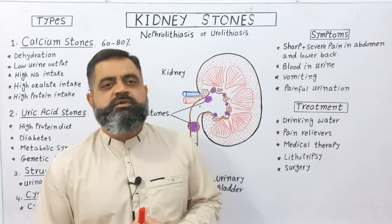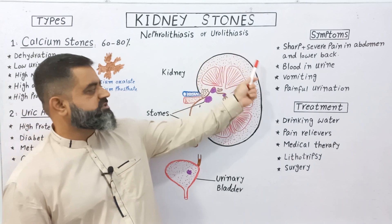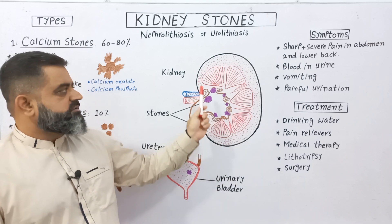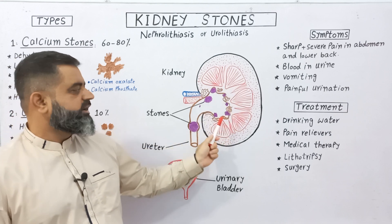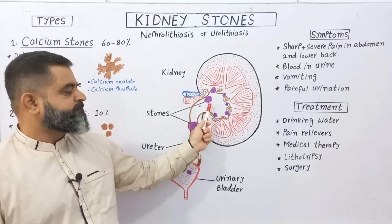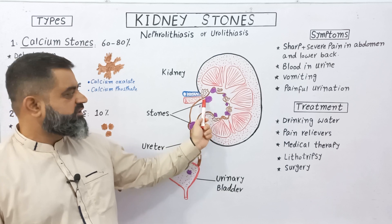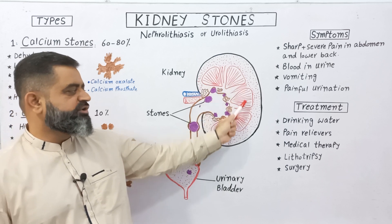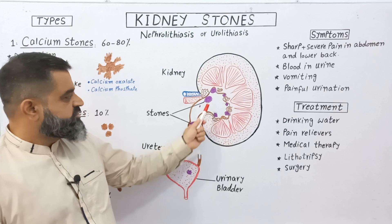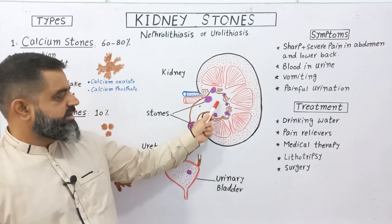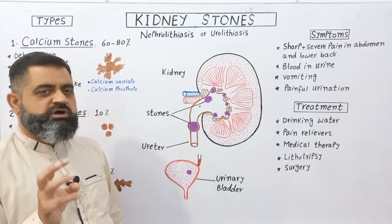Now let's look at the urinary system to understand the location of the stones. In this diagram, the kidney has an outermost surface known as the renal cortex and an inner surface which is the renal medulla, and towards the concave side there is a funnel-shaped structure known as the pelvis. Usually stones are formed in this region, but certain stones are also found in the medullary region. Some stones are larger while other stones are smaller, and they can also move from the kidney into the ureter and from the ureter into the urinary bladder.